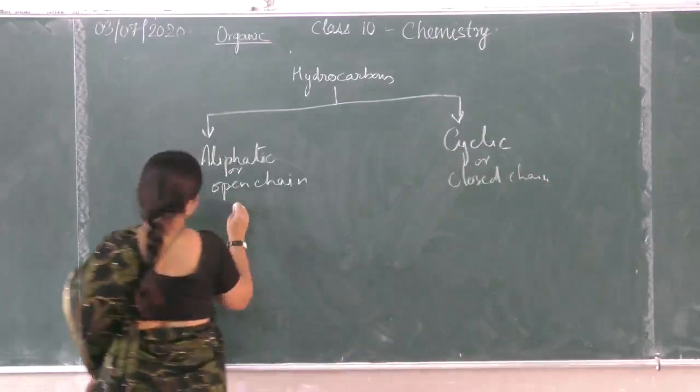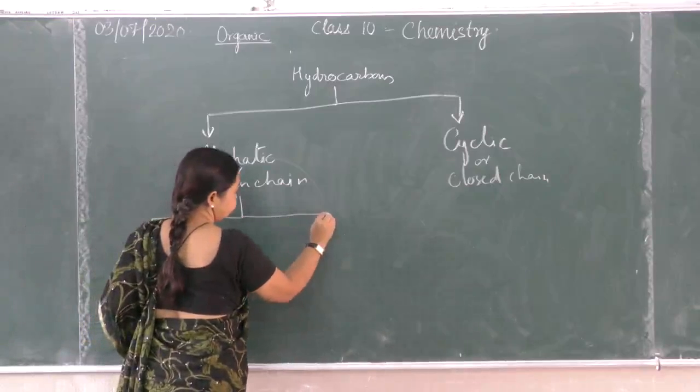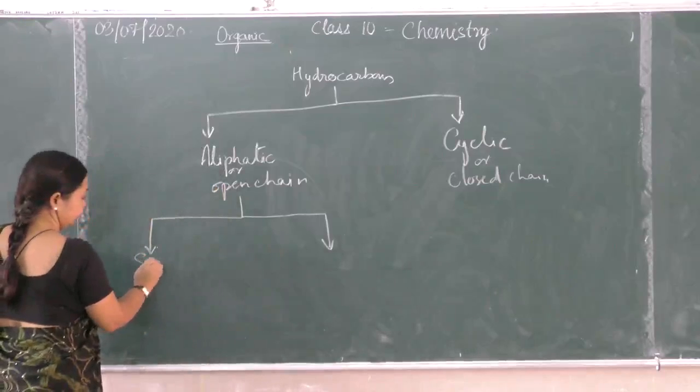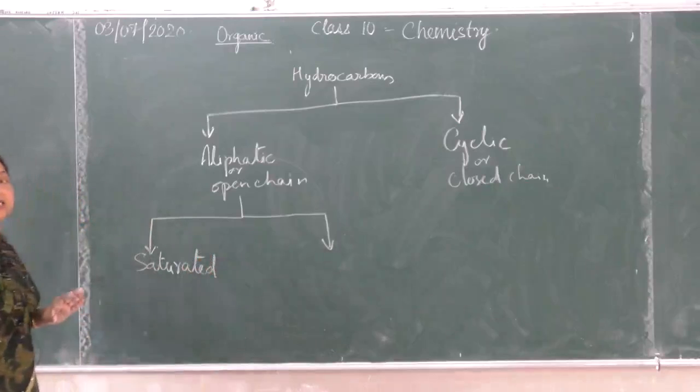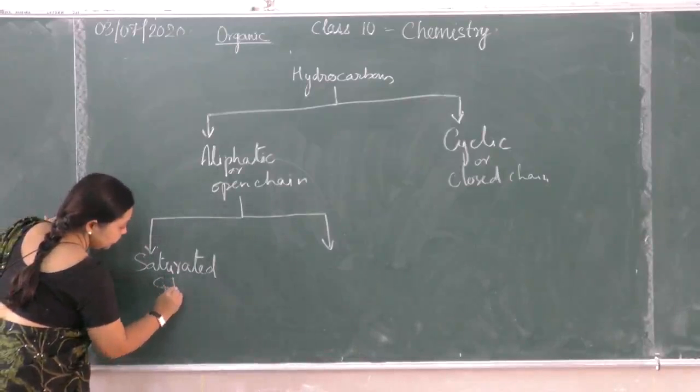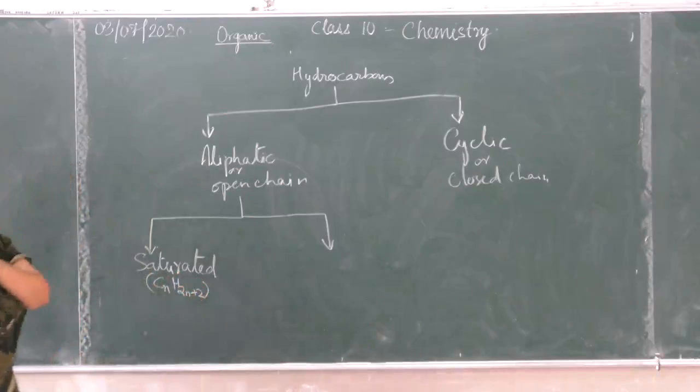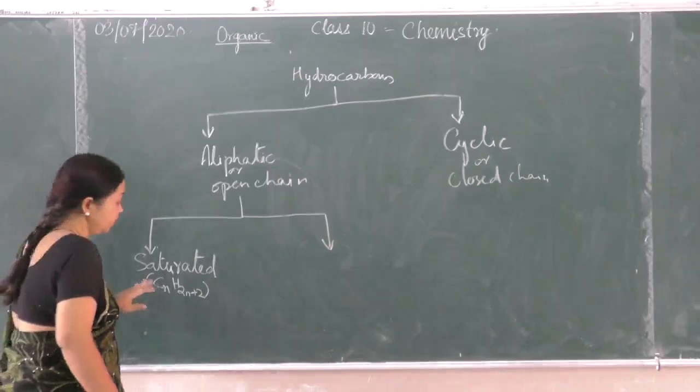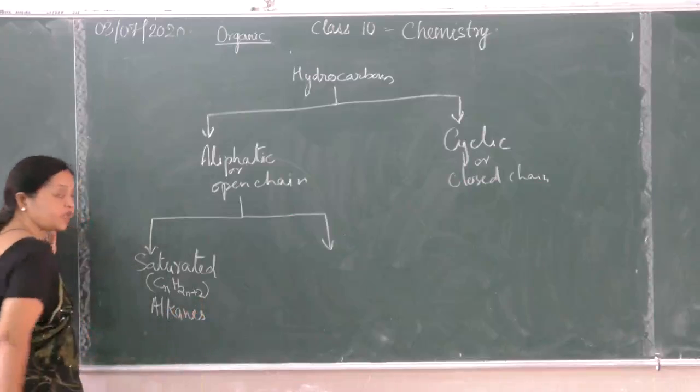Aliphatic can be saturated or unsaturated. Saturated means all single covalent bonds - the carbon atoms are linked by all single covalent bonds. The general formula is CnH2n+2. All saturated hydrocarbons follow this general formula and they are called alkanes. They are less reactive due to unavailability of electrons.